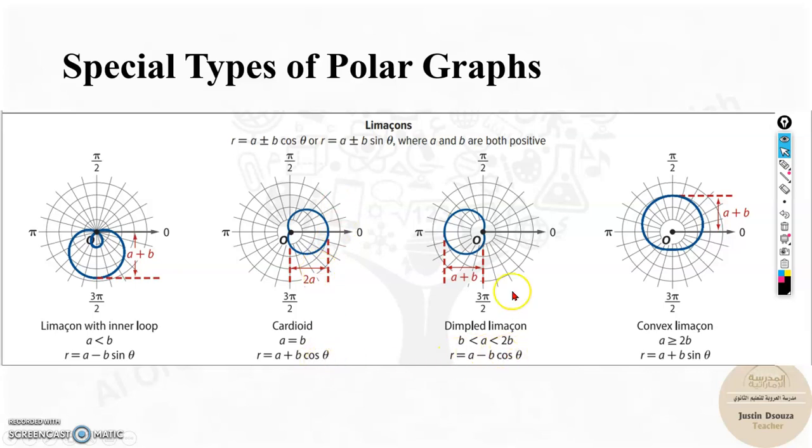Again, just now we saw in the circles, whenever we have cos, it's either right or left. When it's sine, it's up or down. You can see the standard form. We will come across this again. Before going to the limassons, I want to say there is cardioids also in limassons. What is this cardioid? Cardioid is something like this. This is the shape. It's similar, but when we solve problems, you'll come to know the difference when you graph.